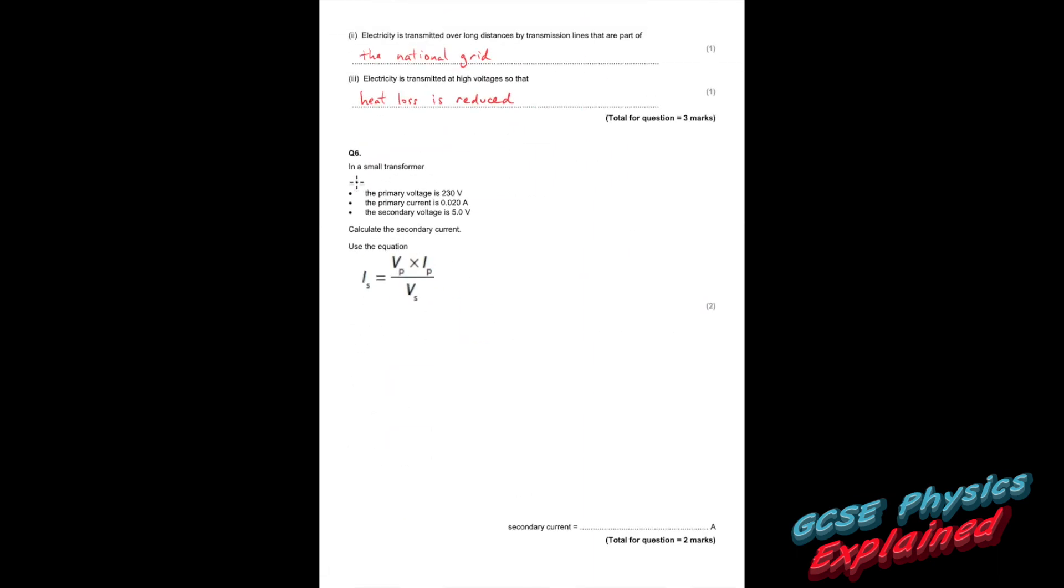Question six. In a small transformer, the primary voltage is 230 volts. So primary voltage, that's the voltage in the primary. The primary current is that. So current is I and if it's in the primary, that's IP. So just have a look at the equation as well and make sure you're using the correct symbols. And the secondary voltage is 5 volts. So that's the voltage, but it's in the secondary. So remember, your transformer is a soft iron core like that. And it's got coils on the primary and then coils on the secondary. Do you know the difference between step up and step down? Let's show you that picture.